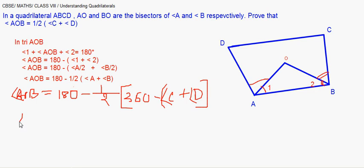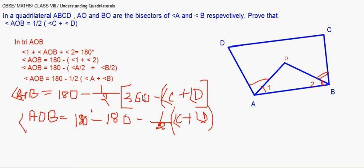Now again, I'll write it the way we did the previous step. So it is 180 minus, if I open the bracket, I'm getting 360 by 2, that's 180, and here I'm getting half of angle C plus D. So we get angle AOB is equal to 180 minus 180, which becomes 0. So I'm left with half of C plus D. Look at the question, this is what we had to prove. AOB is equal to half of angle C and angle D.